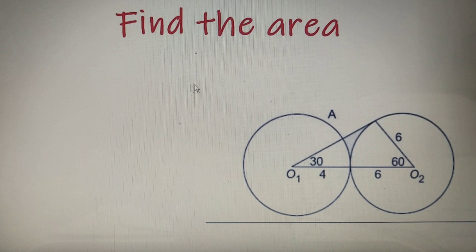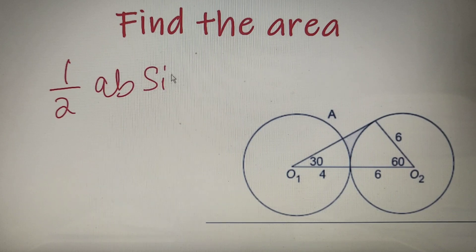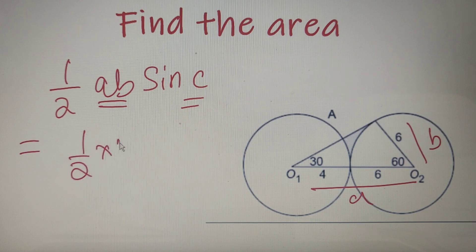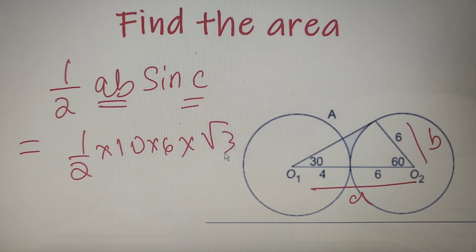Now we can solve the same question with a different method which is as follows. We know that the area of a triangle is equal to half AB sin C, where C is the angle between sides A and B. If we take this side as A and this side as B, then we'll get our answer as half into 10 into 6 into sin C, which is equal to sin 60 degrees, which is nothing but root 3 by 2.